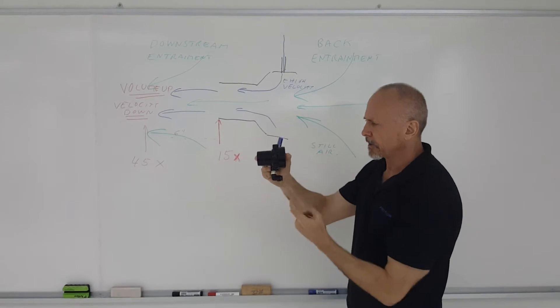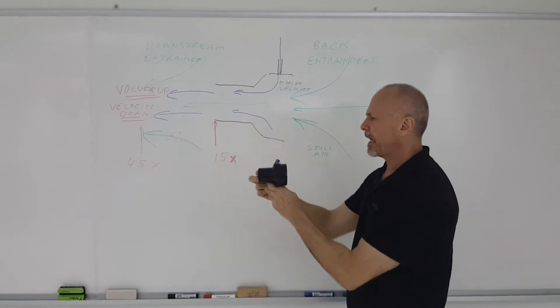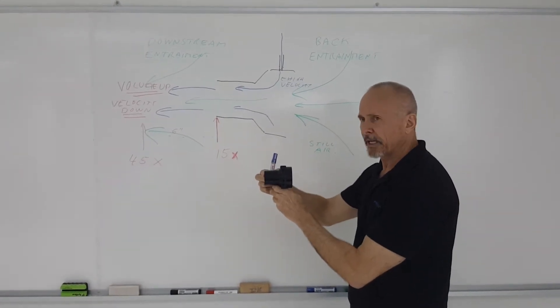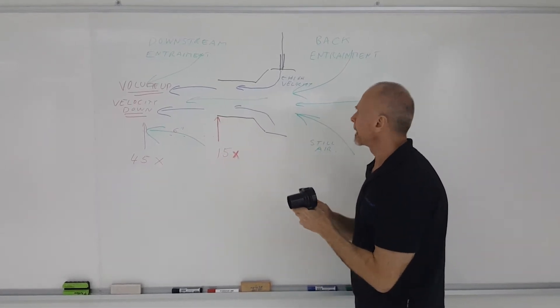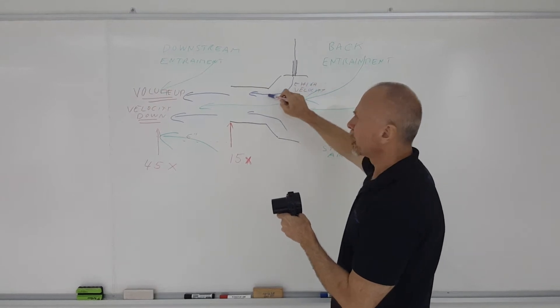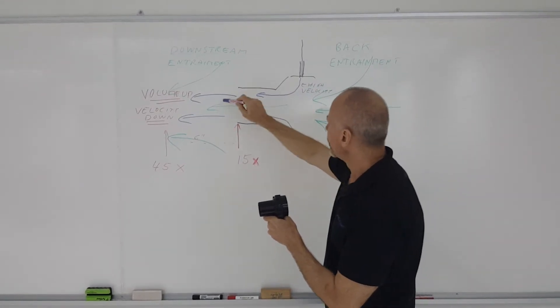In this case, the compressed air comes in here and you have the amplified air coming out here. How an air amplifier works is very basic. The compressed air comes in, goes over what they call a Coanda profile, goes through the unit,